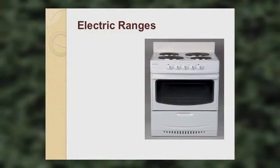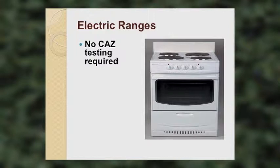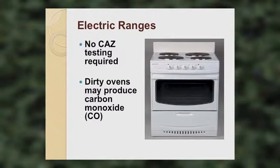Electric ranges don't have combustion appliance zones — it's not a combustion appliance, so there is no CAS zone for an electric oven or range. However, an electric oven that is dirty will produce carbon monoxide.